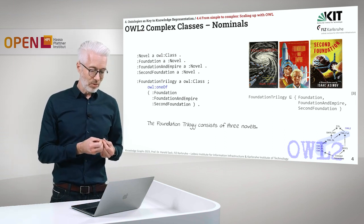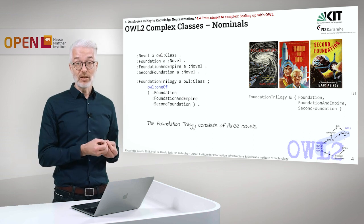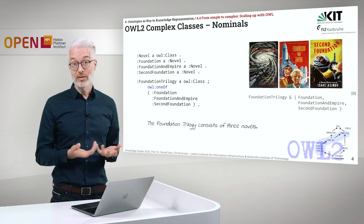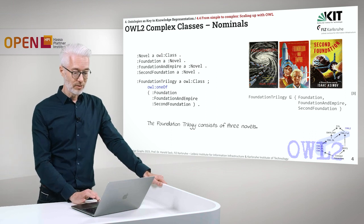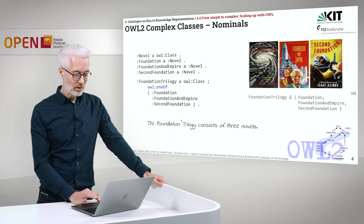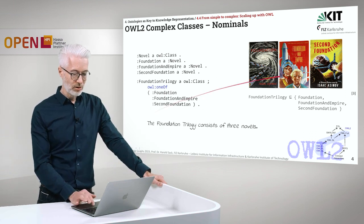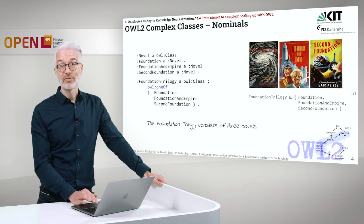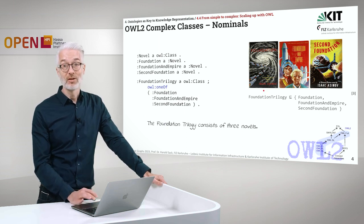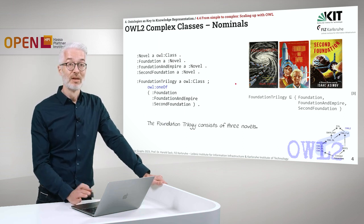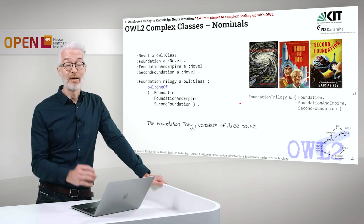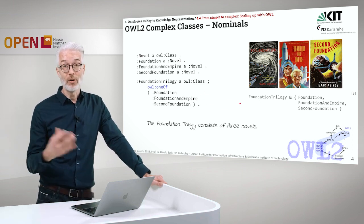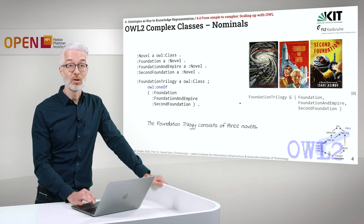What we want to say here is that the Foundation Trilogy — the famous book series of Isaac Asimov — consists of three novels. You can see here the book covers of the first editions of these novels. Let's see how we define a closed class, a nominal, as we have already learned in description logics.